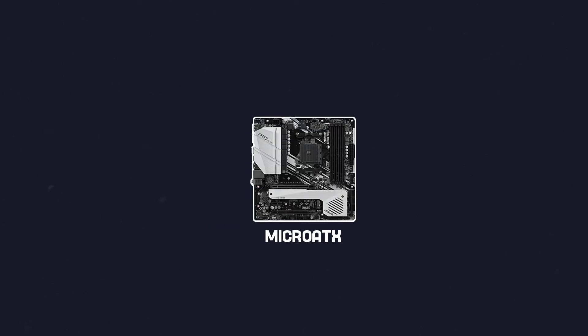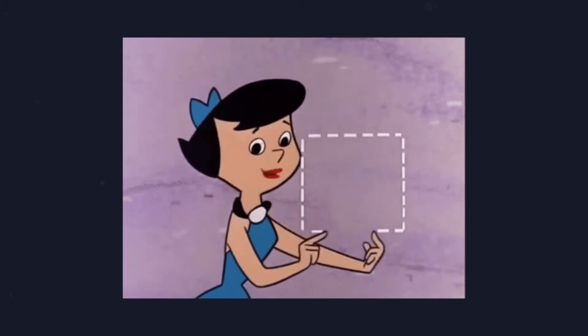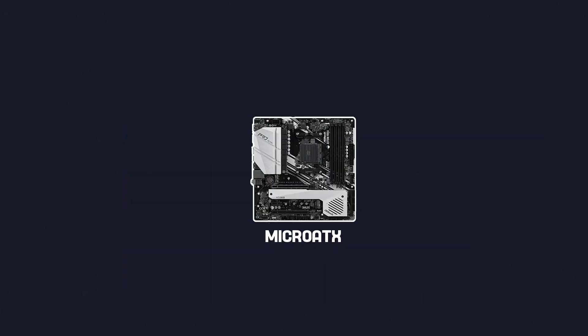Then we have the Micro-ATX. It looks exactly like a regular ATX motherboard, only a little smaller. It comes in a square shape with its dimensions being 9.6 inches by 9.6 inches.